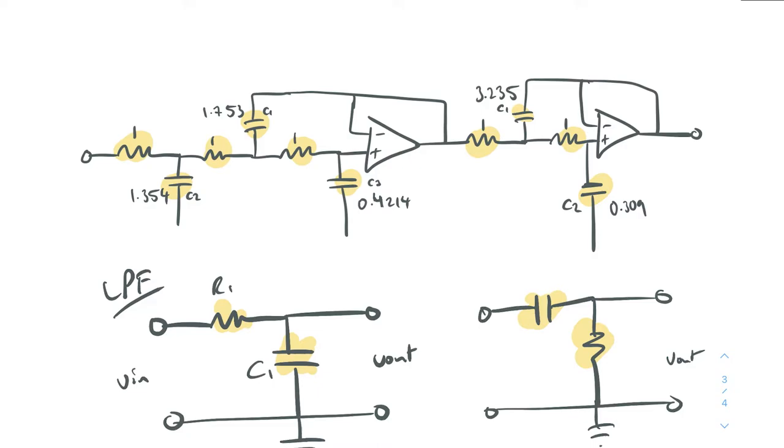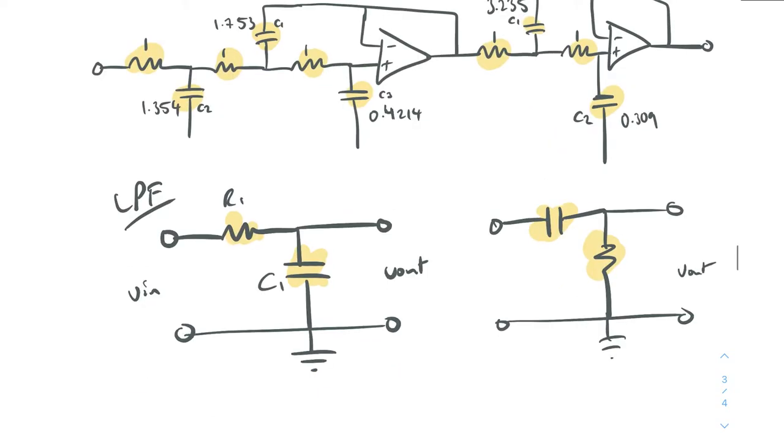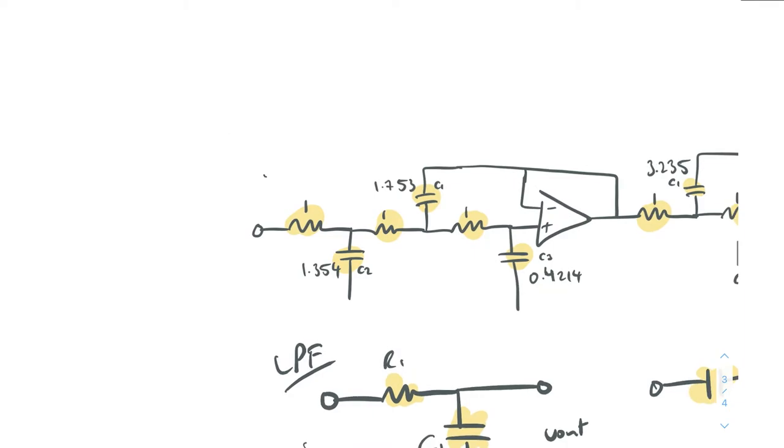So now let's just redraw this circuit but we're going to do it with, for example here, we're going to swap this resistor for a capacitor and we're going to swap this capacitor for a resistor.